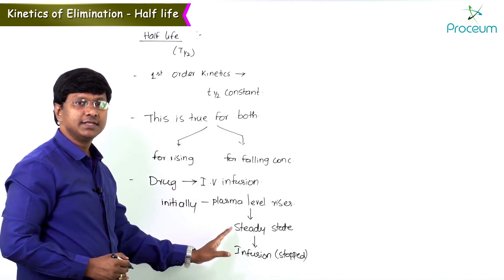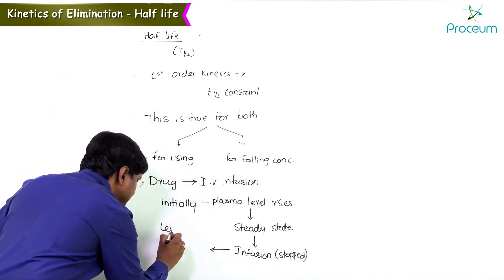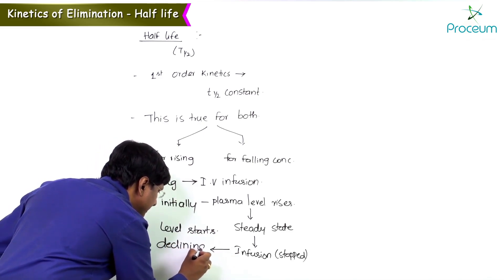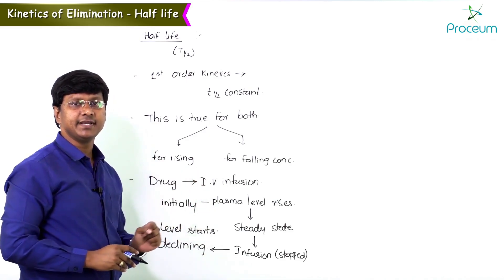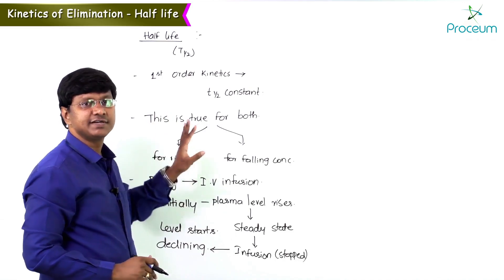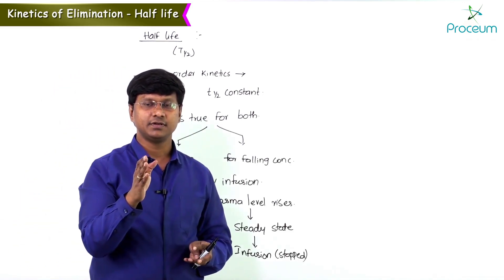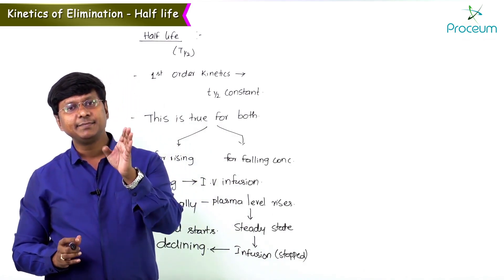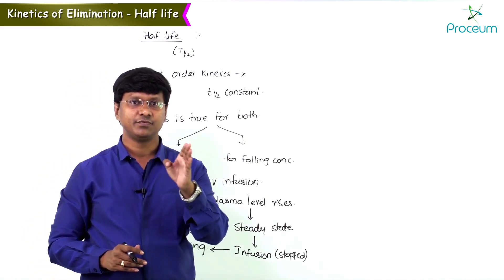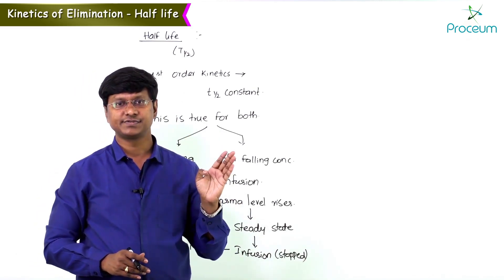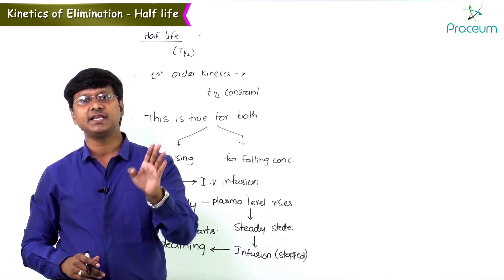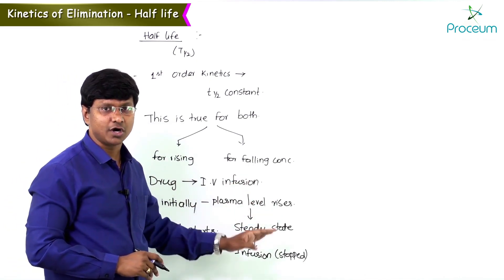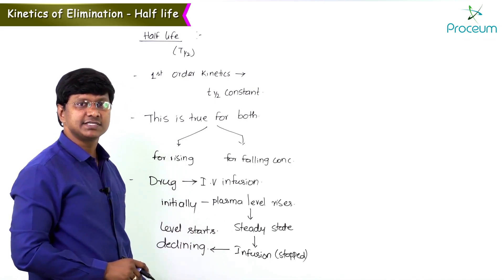Once the infusion of the drug is stopped, the level starts declining in a constant fraction. The elimination of the drug is 50% in one half-life, 75% in two half-lives, and 87.5% in three half-lives, and so on.